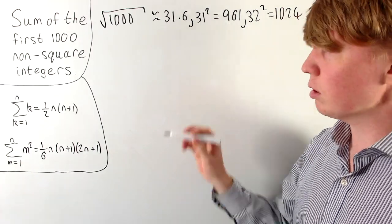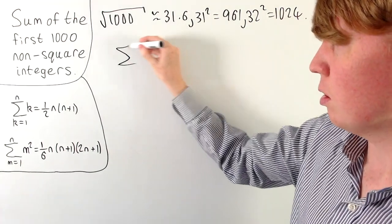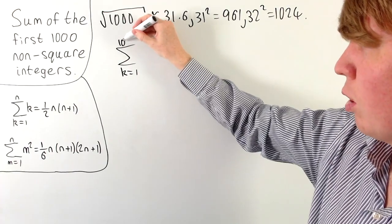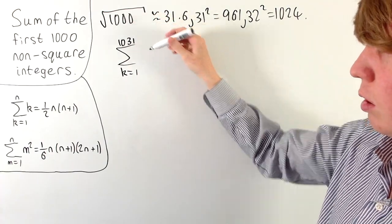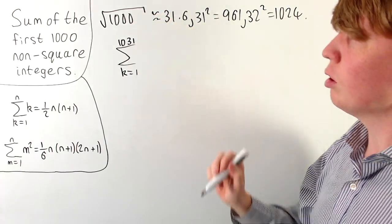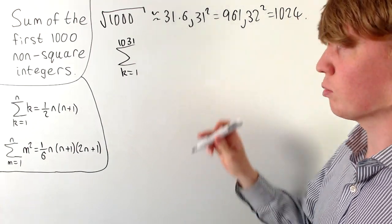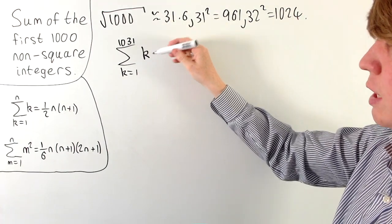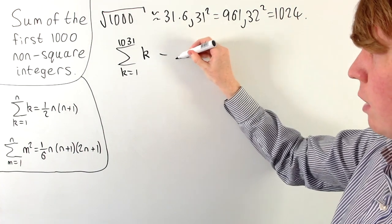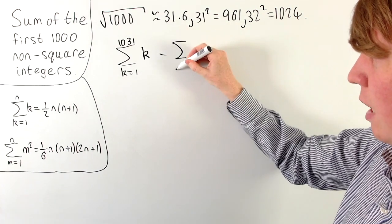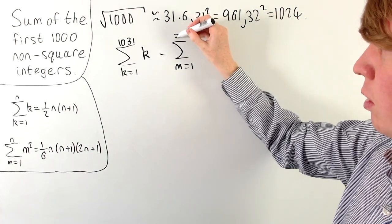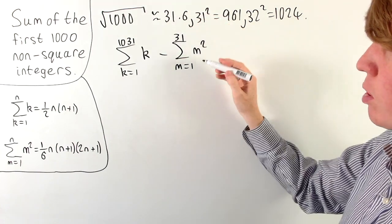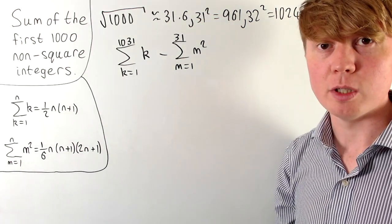We can calculate the sum of all integers from 1 up to 1,031 — including all of the square numbers which we'll then subtract. So we take the sum of all these integers, then subtract the sum from m = 1 up to 31 of m², removing all those square numbers.